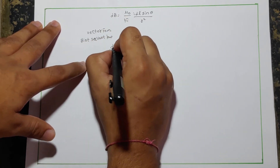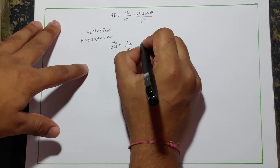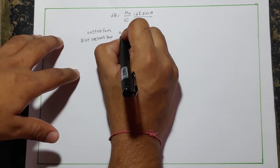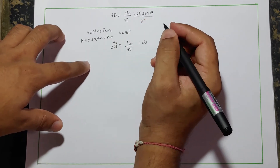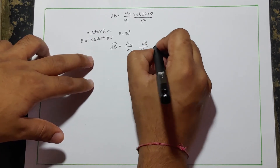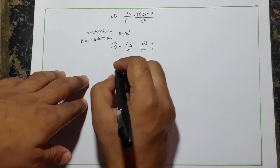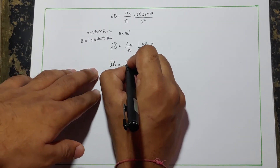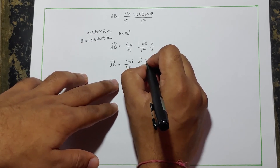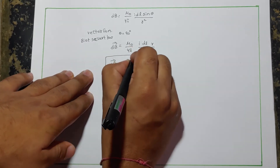For the Biot-Savart law in vector form, we consider theta = 90° for maximum flux linkage. The expression becomes dB = (μ₀/4π)·I·(dl × r̂)/R². Therefore: dB = (μ₀/4π)·I·(dl⃗ × r̂)/R³. This is the vector form of the Biot-Savart law.